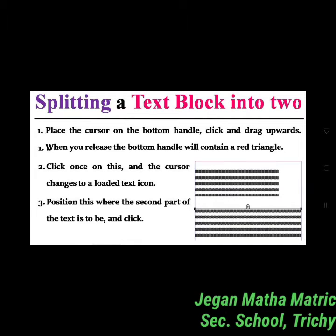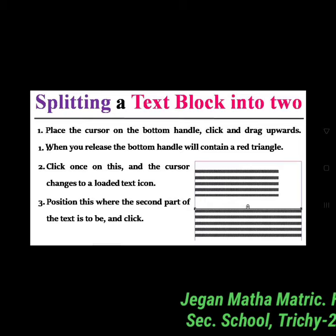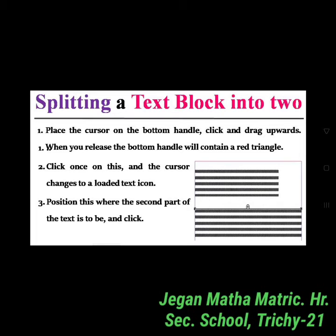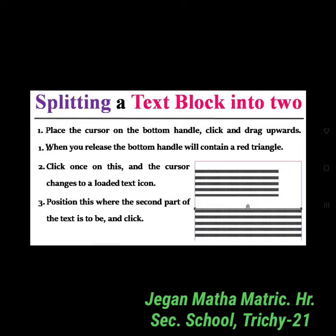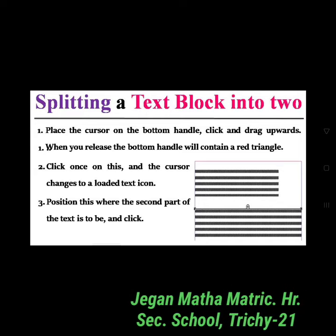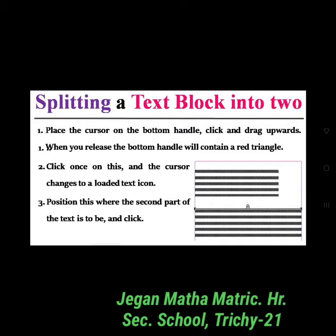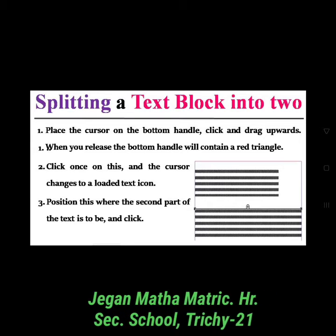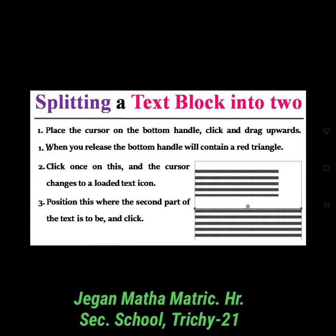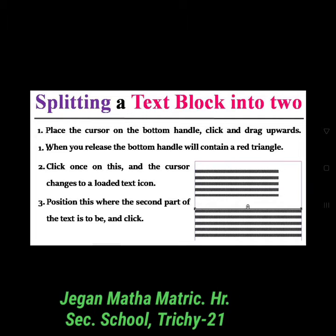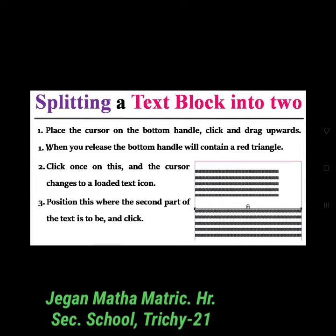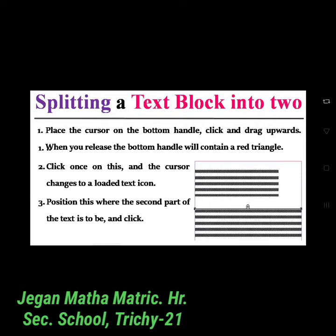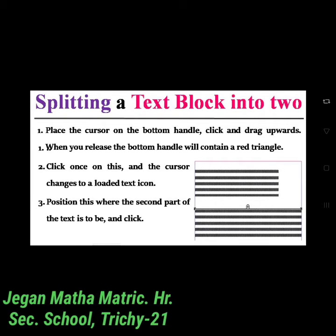To split a text block: place the cursor on the bottom handle, click and drag upwards. When you release the button, the bottom handle will contain a red triangle. Click once on this and the cursor changes to a loaded text icon. Then position this where you want the second part of the text to appear and click.